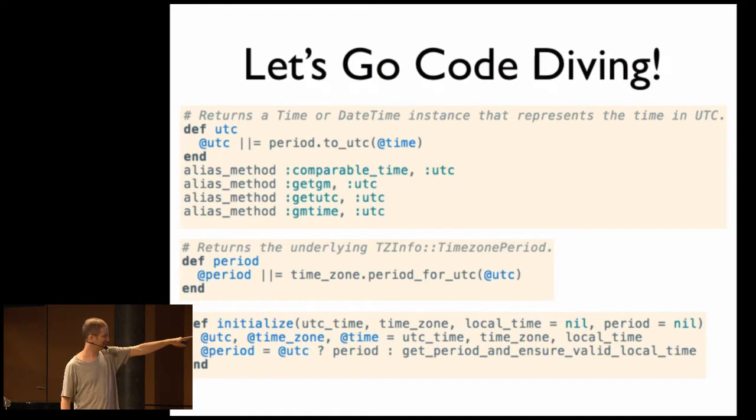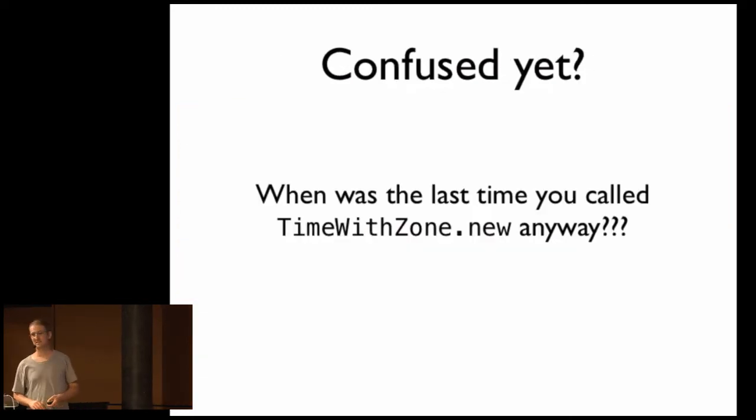The initializer can take a UTC time, time, a time zone, possibly a local time, possibly a period. It might set UTC in time zone or period based on UTC. At this point, you've got to take a step back and ask yourself, when was the last time you called time with zone new anyway?